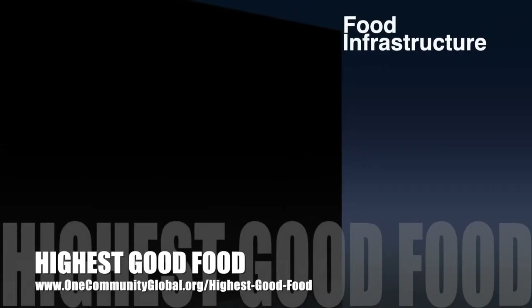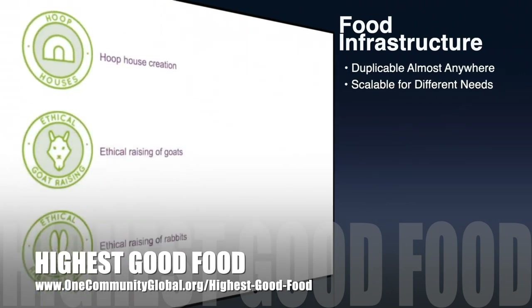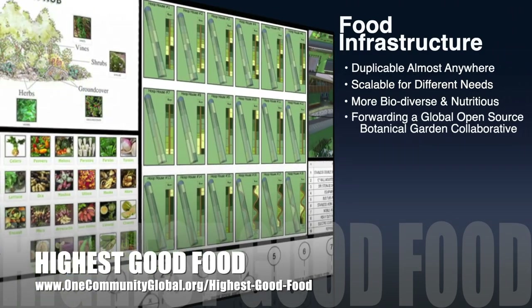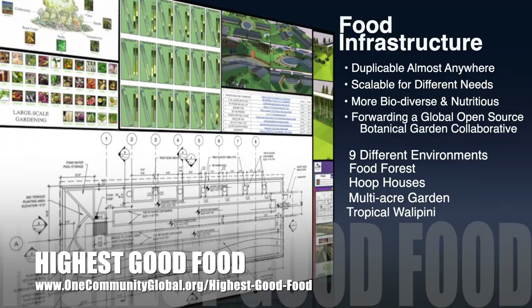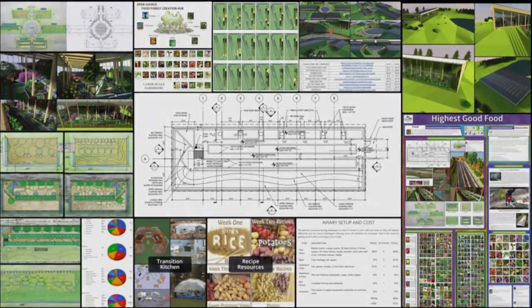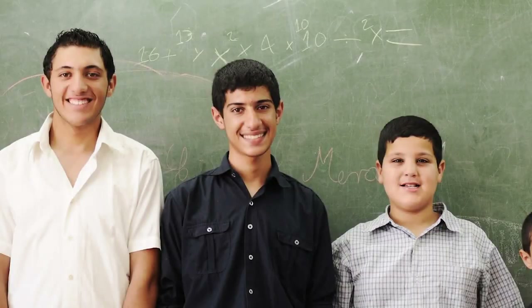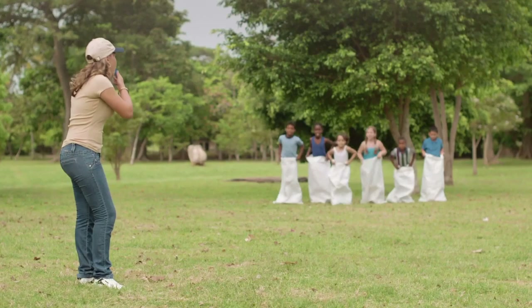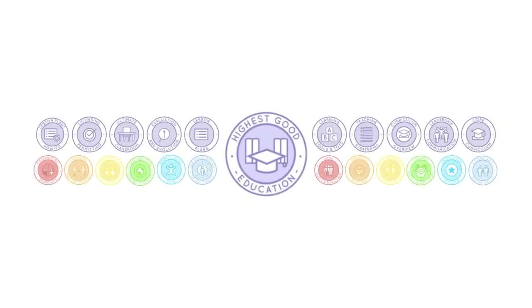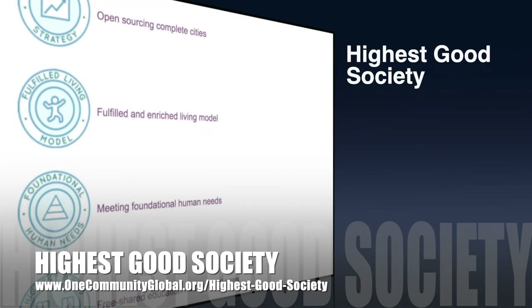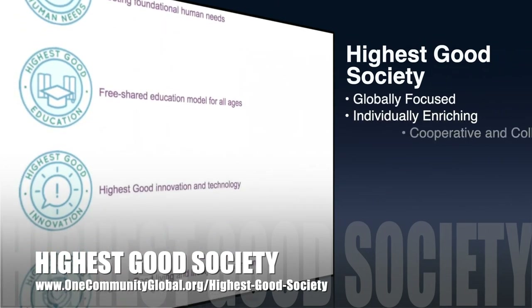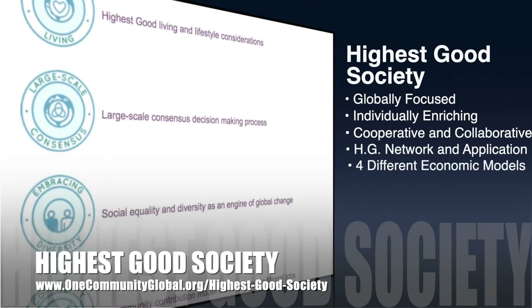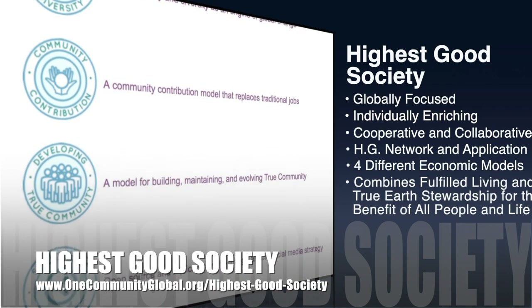One Community's approach to highest good food is duplicable almost anywhere, scalable for different needs, more biodiverse and nutritious, part of forwarding a global open source botanical garden collaborative, and includes nine different free shared and duplicable growing environments. The next component is highest good education, which is complete and nearly ready to launch once we're on the property. It is designed for all age groups, adaptable to any schooling environment, inspiring and fun, and includes national standards, all subjects, lesson plans, teaching strategies, learning strategies and tools, and classroom design. The One Community approach to highest good society is globally focused, individually enriching, cooperative and collaborative, includes a highest good network and application, four different economic models, and combines fulfilled living and true earth stewardship for the benefit of all people and all life on this planet.